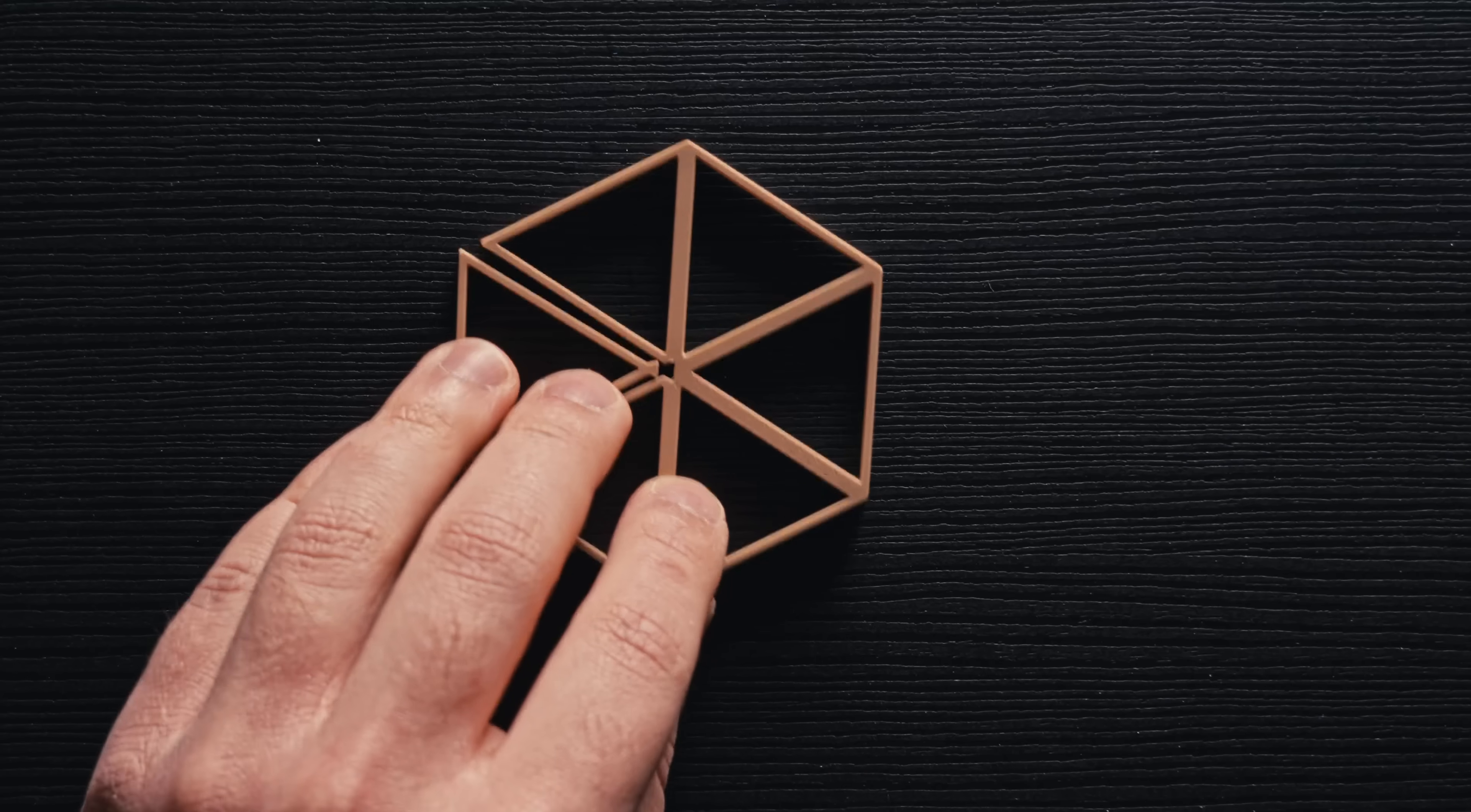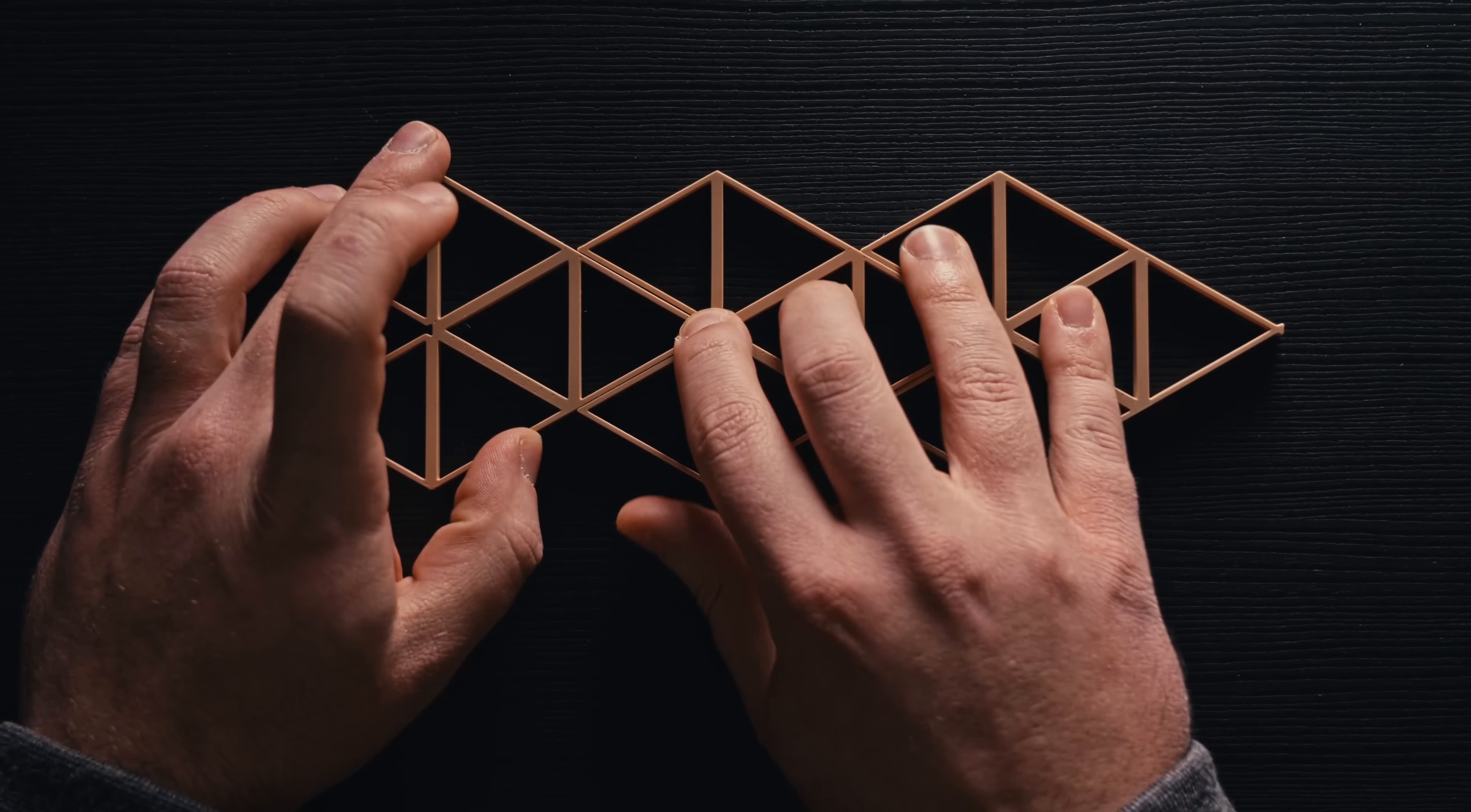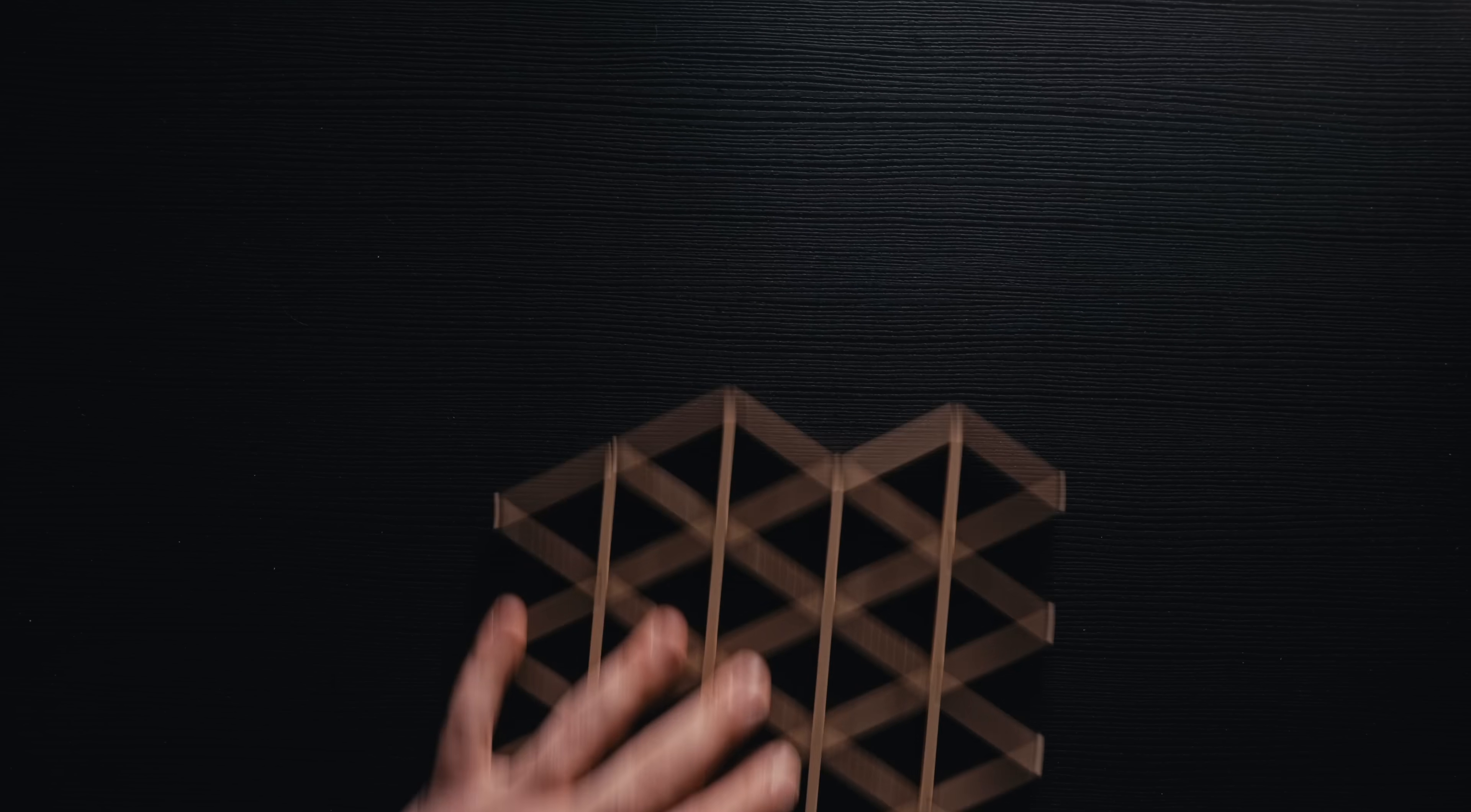So I took advantage of the large area available at the center of the hexagon to create dovetail joints which now let me pattern the shape horizontally. This even lets me create pieces with a thickness as small as 2 millimeters while retaining a bit of strength. The last adjustment I made was making the pattern symmetrical when rotated 180 degrees, and finally maximizing the pattern for the print bed.